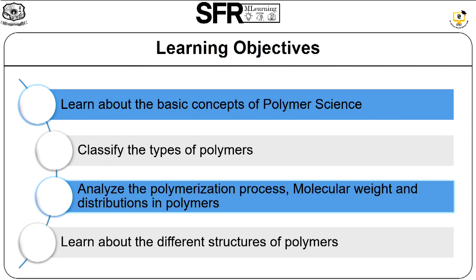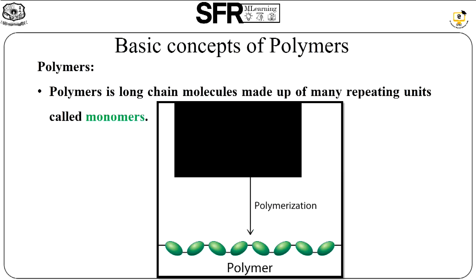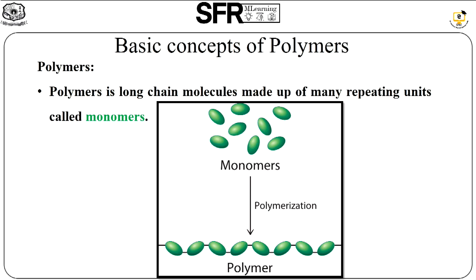So what are polymers? The basic concept is that a polymer is a long chain molecule which is made up of many repeating units called monomers. Next, the degree of polymerization — we should know that the polymer chain molecule has a very long length made up of repeated units.